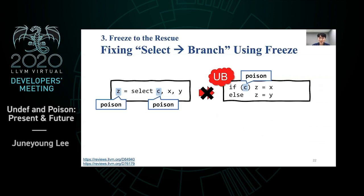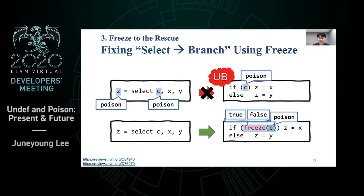After its introduction, freeze was used to fix miscompilations. The first one is converting a select into a conditional branch. When c is poison, the select in the source just returns poison, whereas the conditional branch raises undefined behavior. Passes such as CodeGenPrepare and JumpThreading perform this transformation. To make them correct, the branch condition is frozen — when c is poison, freeze c is either true or false, so the branch is taken or not taken but does not raise undefined behavior.